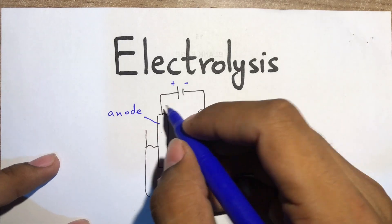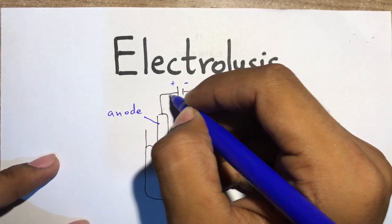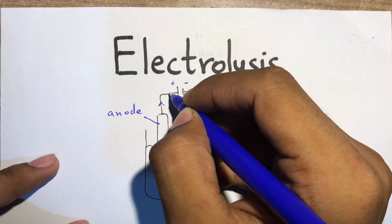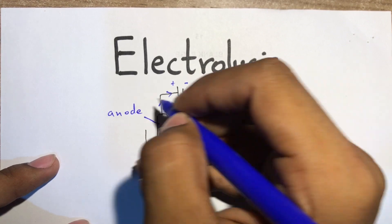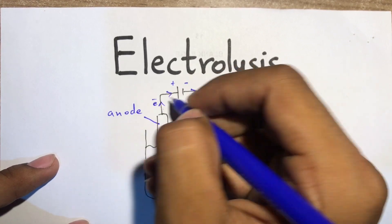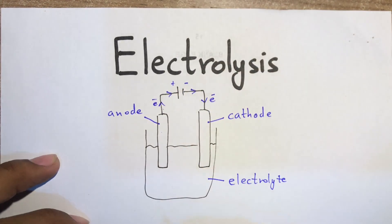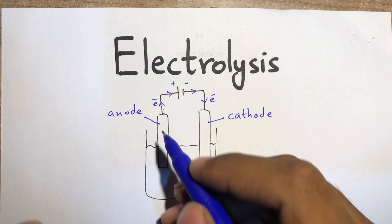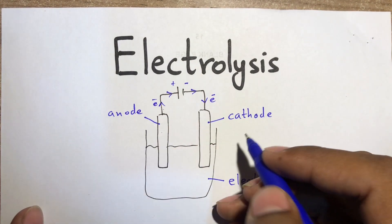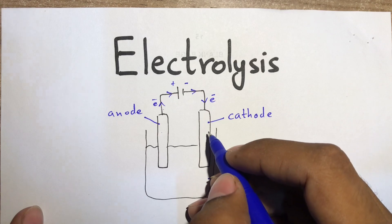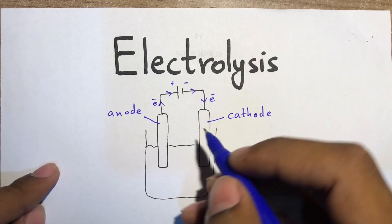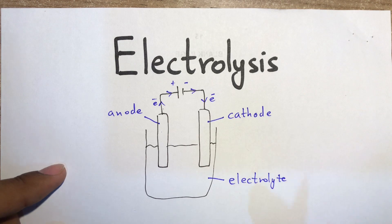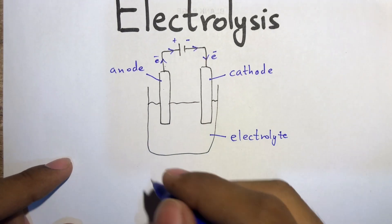The battery's function is to pull electrons from the anode and push them towards the cathode. So this is the direction of electron flow. We can see there is a loss of electrons at the anode and a gain of electrons at the cathode.